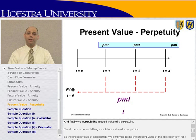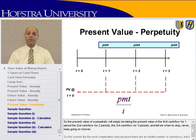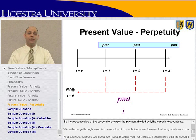Finally, we compute the present value of a perpetuity. Recall, there is no such thing as the future value of a perpetuity. The present value is calculated by taking the present value of the first cash flow for one period, the second for two periods, the third for three periods — continuing forever. This sounds like the most complicated case, but it actually turns out to be the most simple formula: the present value of a perpetuity is simply the payment divided by I, the periodic discount rate.